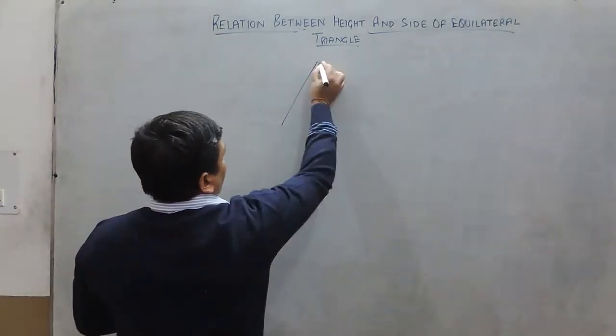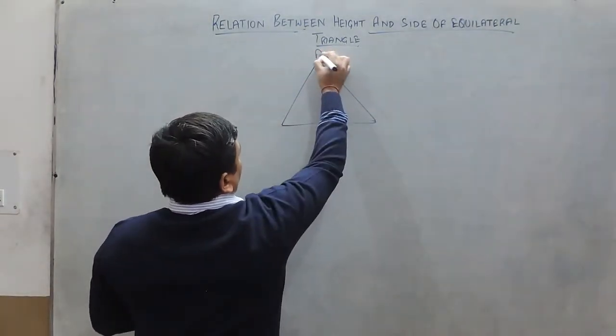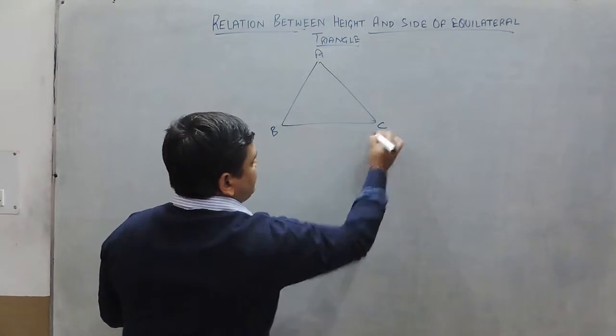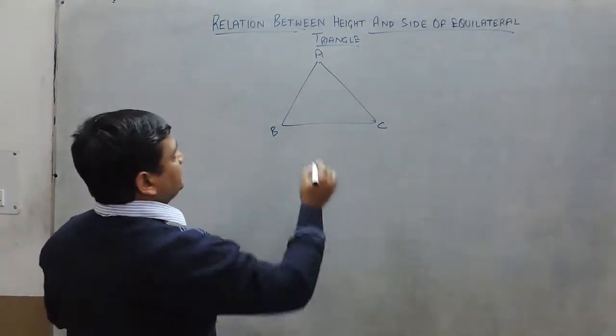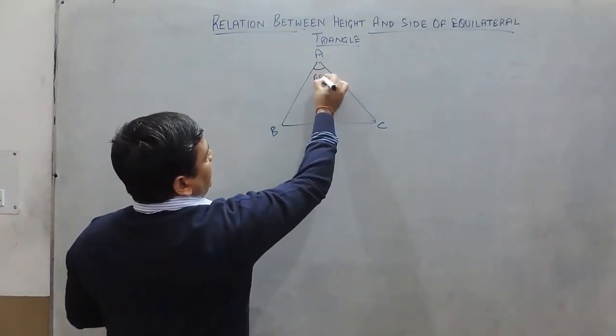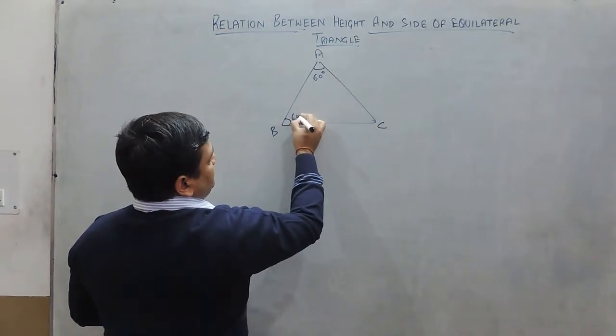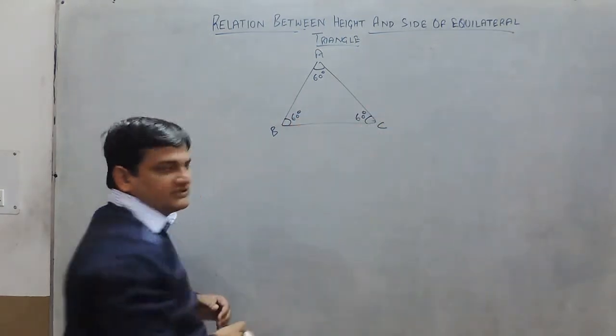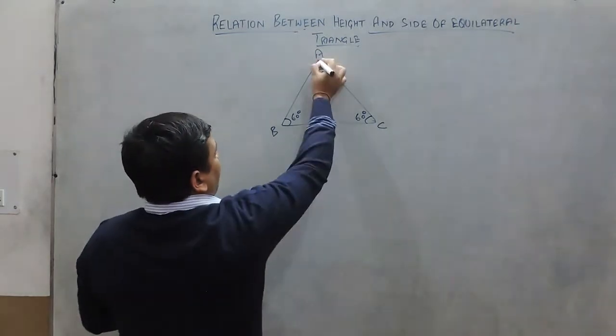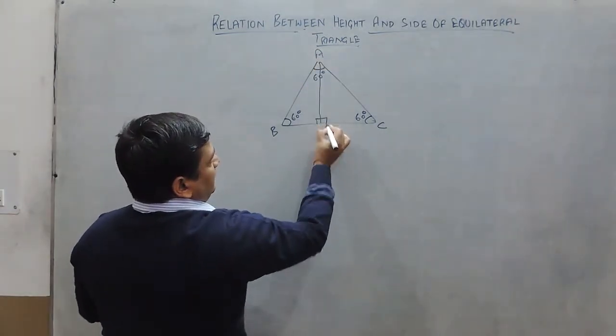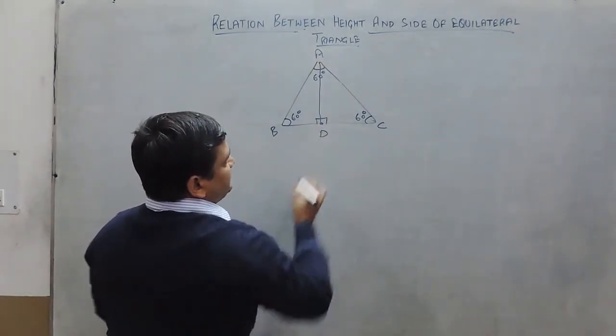For example, A, B, C is an equilateral triangle in which angle A is 60 degrees, B is also 60 and C here is also 60. Let AD is the height of this triangle.